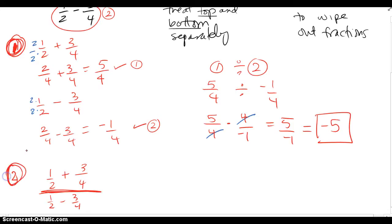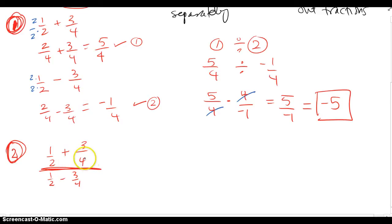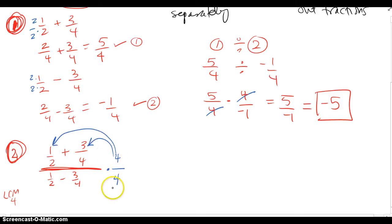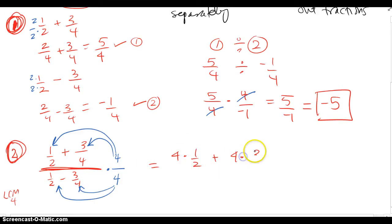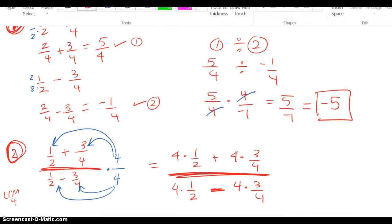For Method 2, we're going to use the LCM to wipe out fractions. I've recopied the complex fraction and I look at all four denominators and use the LCM of four. I multiply the top and bottom of the big fraction by four over four, which is essentially one. When I multiply top and bottom by four, the four gets distributed into both pieces on top and both pieces in the bottom — so I have four times one half plus four times three fourths all over four times one half minus four times three fourths, and when I do that I get some cancellation.